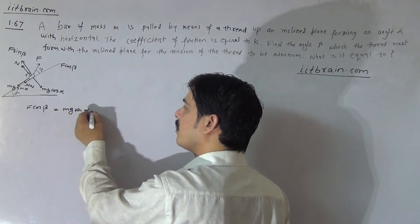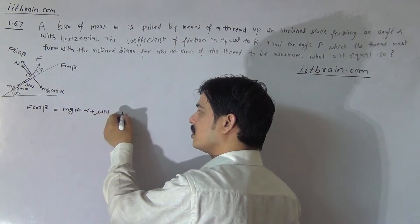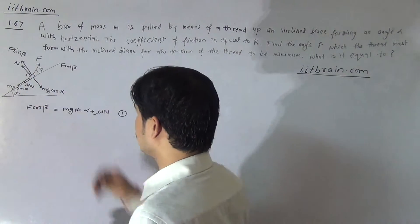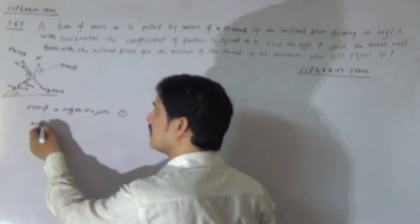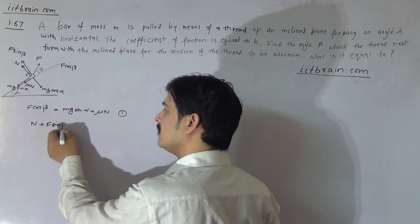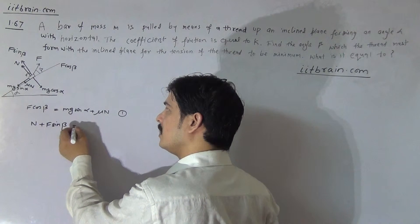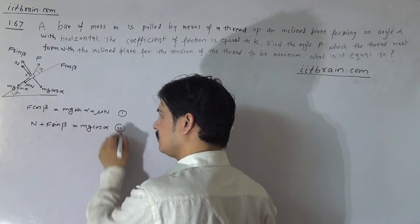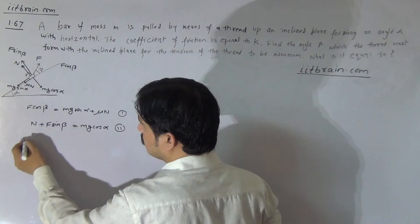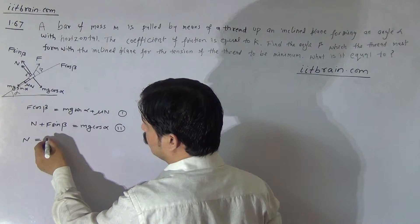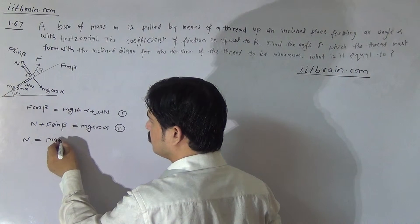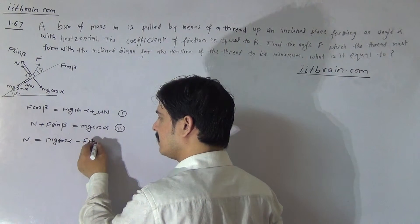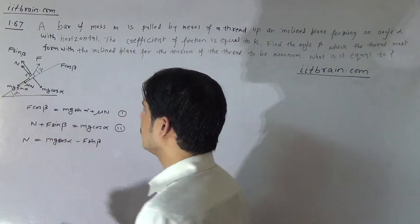For motion along the incline: F cos beta equals mg sin alpha plus mu times N. In the direction perpendicular to the incline, N plus F sin beta should equal mg cos alpha. From this second equation, N equals mg cos alpha minus F sin beta.